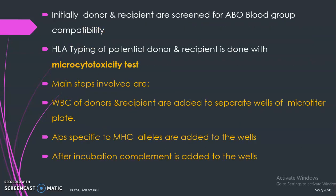Initially the donor and the recipients are screened for ABO blood grouping compatibility. We have already learned ABO blood group compatibility testing in the previous classes. If the blood groups are compatible, we then go for HLA typing, which is done for the potential donors and the recipients.